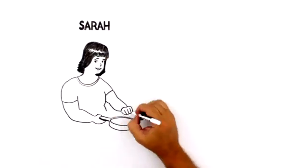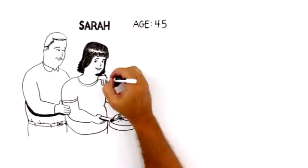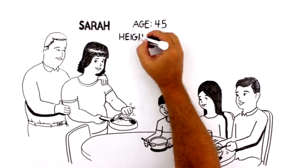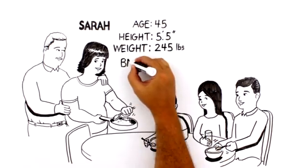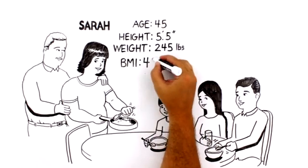Take Sarah, for example. She's a 45-year-old wife and mom of three kids. She's 5'5 and weighs 245 pounds. That means her body mass index, or BMI, is 41.